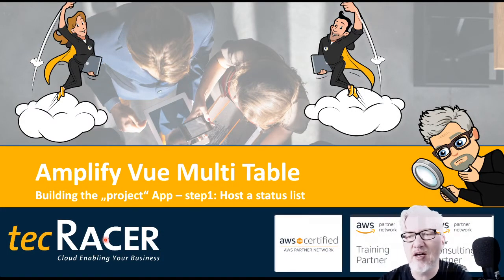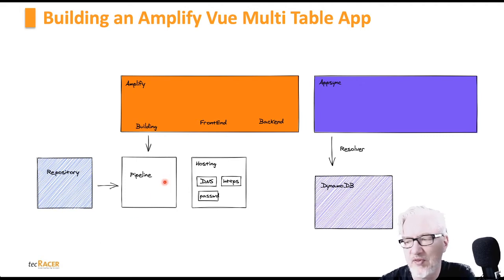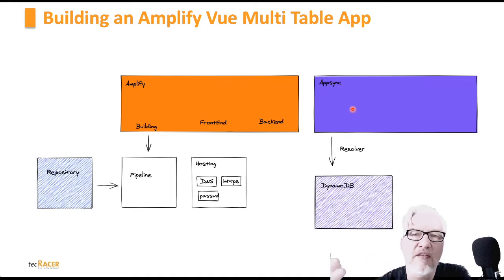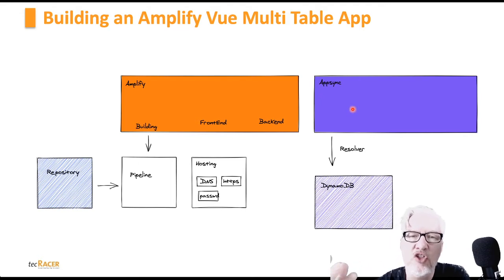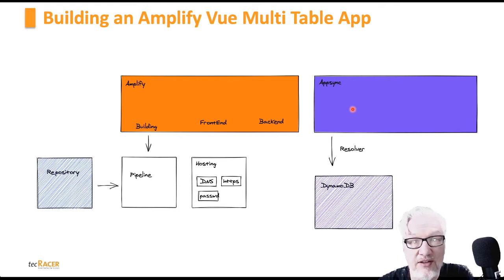Amplify Vue multi-table — what do we have? If we have an AWS Amplify app, we have a little bit of architecture. The main services are Amplify itself and AppSync if you use GraphQL as an API. You can also use the Lambda API. The whole Amplify framework — the libraries, the CLI, and the services — are in addition to the whole serverless world, which is also why I'm doing this.